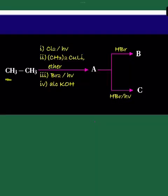Here is another question from alkanes and alkenes. Initially, ethane is treated with chlorine in the presence of sunlight. As a result, you will get chloroethane, also called ethyl chloride.